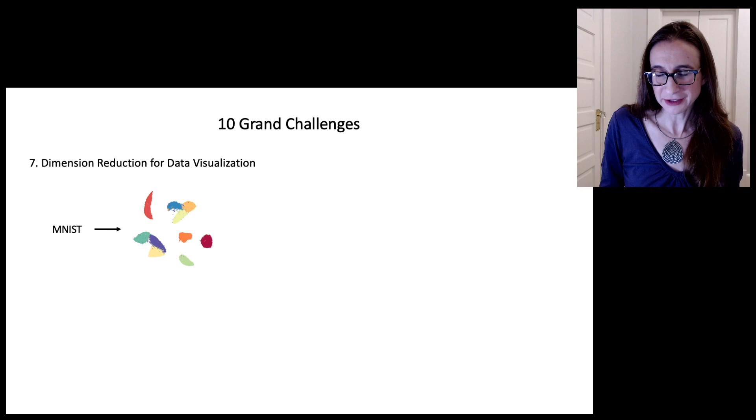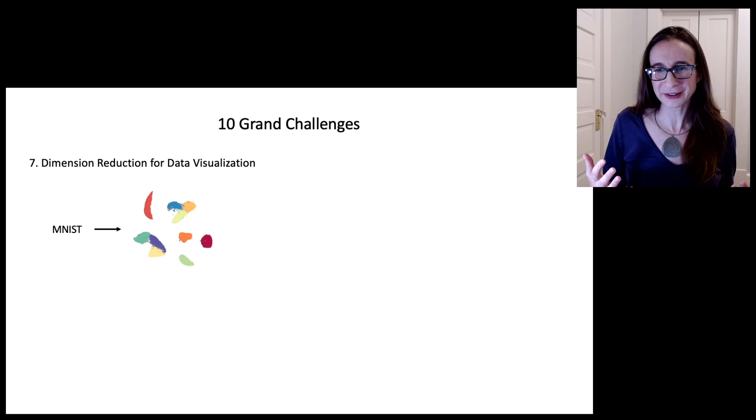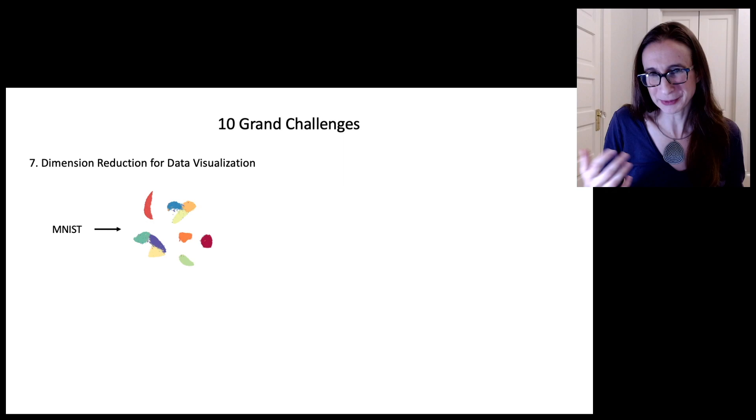The seventh one is dimension reduction for data visualization. Dimension reduction has long been used to try to take high dimensional data and project down to low dimensions to try to keep its structure. So that you can understand what's in the data and helps you build models that are hopefully interpretable and make sense.